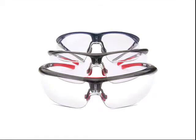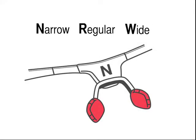Unlike most other safety eyewear, North Adaptec comes in three different sizes: narrow, regular, and wide. Look for the size marked on the inside of the nose bridge. N for narrow, R for regular, and W for wide.